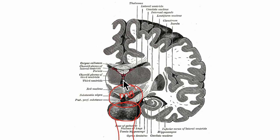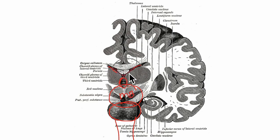Right here you can see the third ventricle. Here we have the lateral ventricle and the third ventricle is connected to the fourth ventricle through the cerebral aqueduct.